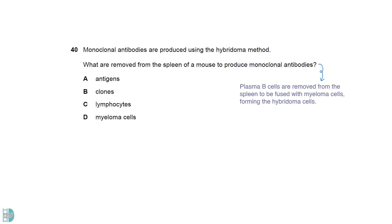Plasma B cells are removed from the spleen to be fused with myeloma cells, forming the hybridoma cells. The plasma B cell is a type of lymphocyte.